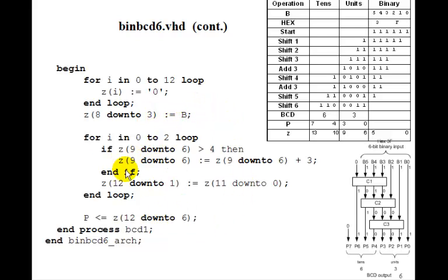Then we've got to go through this loop 3 times for the next 3 shifts. So we can say for i in 0 to 2 loop, so this is going to go through 3 times. And we check the units. Well, the units is Z(9 down to 6). 9 down to 6 is the units. So if the units is greater than 4, then we just want to add 3. We can just say Z(9 down to 6) is Z(9 down to 6) plus 3. That will put in a little adder.